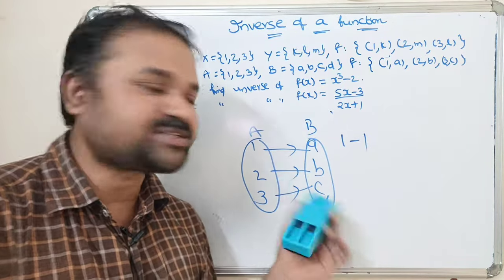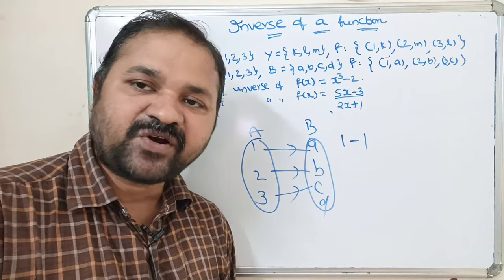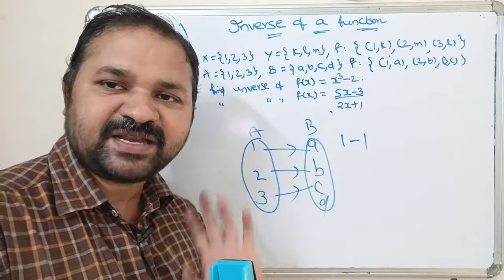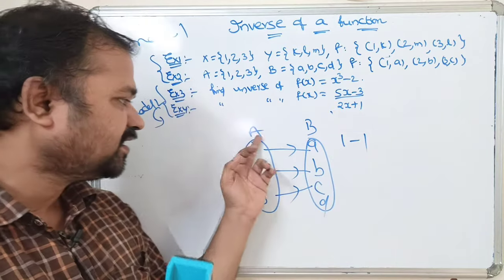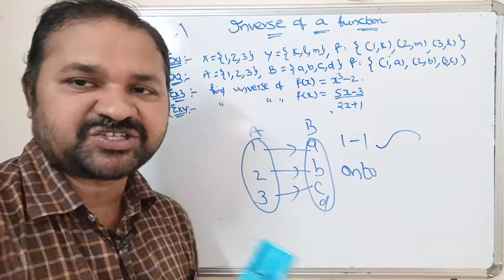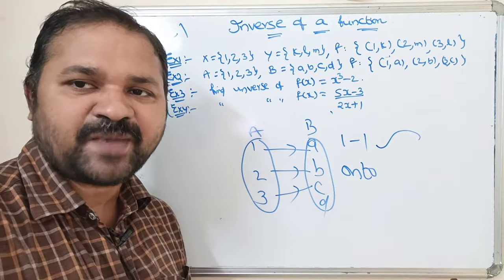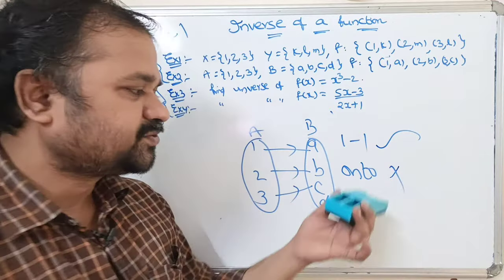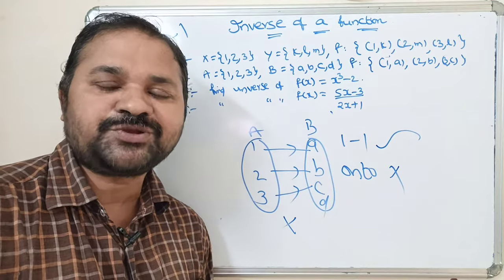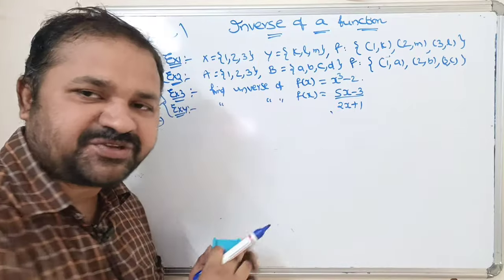Let us check whether it is one-to-one. Distinct elements of set A are mapped to distinct elements of set B: 1 to a, 2 to b, 3 to c, so it is one-to-one. For onto, every element of set B should have a mapping. But d has no mapping, so this is not an onto function, hence not a bijective function, and we cannot compute f inverse.